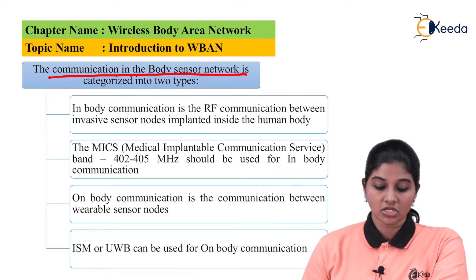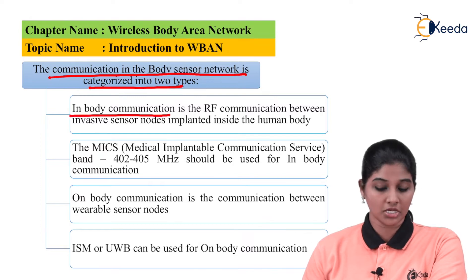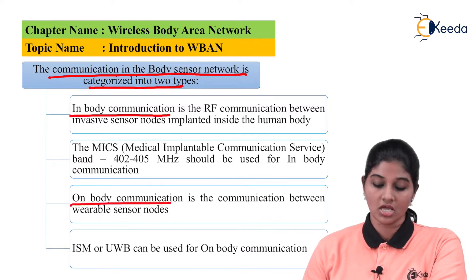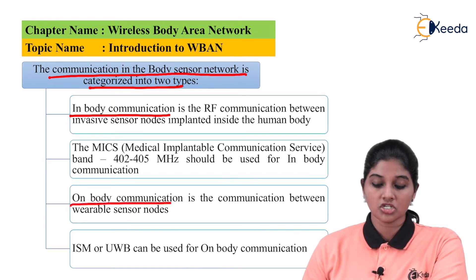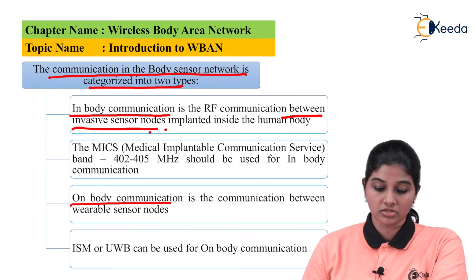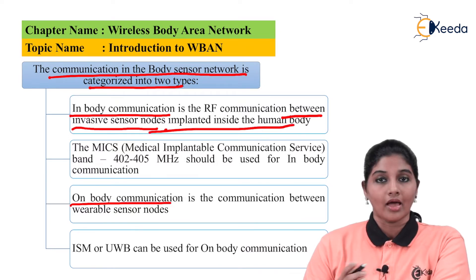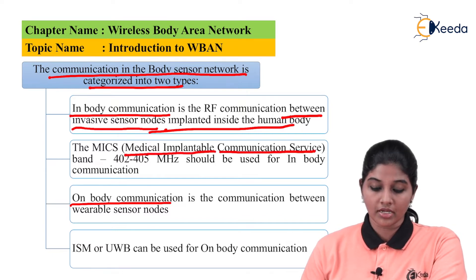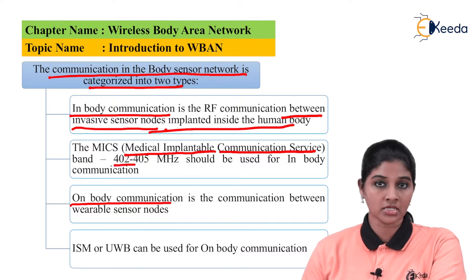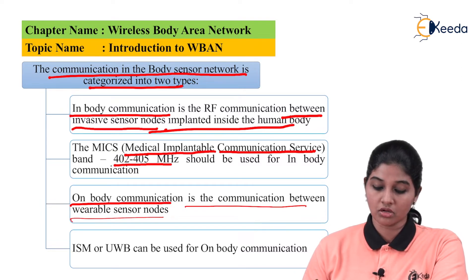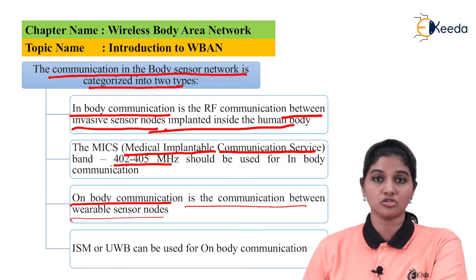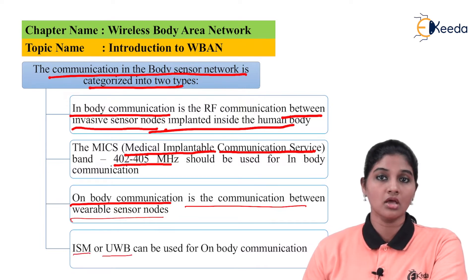In case of wireless body area network, communication in the body sensor network is divided into two types: in-body communication and on-body communication. In-body communication is the form of RF communication between sensor nodes implemented inside the human body. The frequency at which this communication takes place is defined by Medical Implantable Communication Services (MICS), with a frequency range of 402 to 405 MHz. On-body communication is the type of RF communication between wearable sensor nodes, i.e., biosensor devices mounted outside the human body.